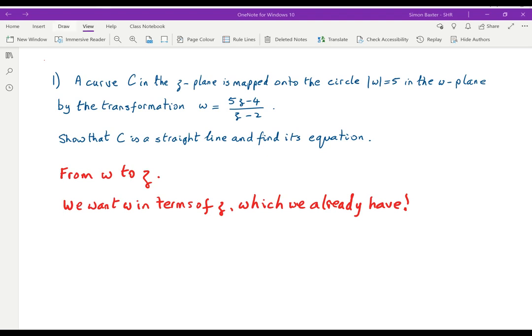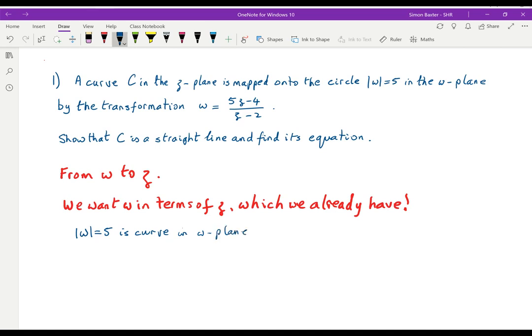Mod W equals 5 is the curve in the W plane. So in the Z plane we have mod W is 5Z minus 4 over Z minus 2, which equals 5. Multiply both sides by mod z minus 2 and we get mod 5z minus 4 is 5 mod z minus 2. Divide both sides by 5 and we get mod z minus 4 fifths is equal to mod z minus 2.